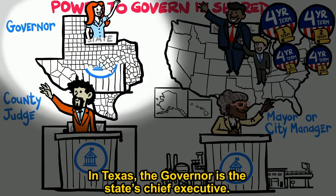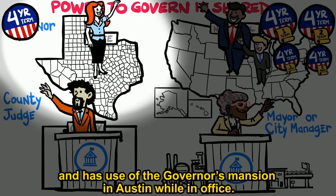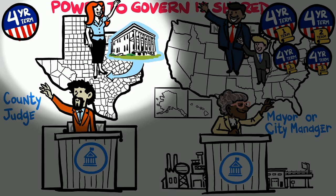In Texas, the governor is the state's chief executive. The governor is elected by the voters for a four-year term and has use of the governor's mansion in Austin while in office.